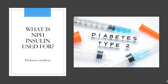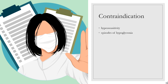Insulin human is a recombinant form of human insulin used to control hyperglycemia in diabetes mellitus. You should not use NPH insulin if you are allergic to it, or if you are having an episode of hypoglycemia (low blood sugar). Do not give NPH insulin to a child without a doctor's advice.